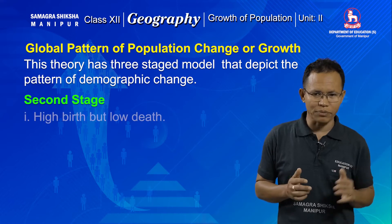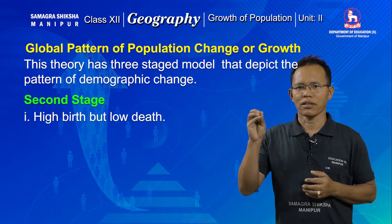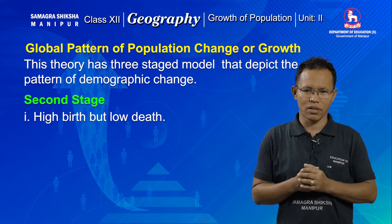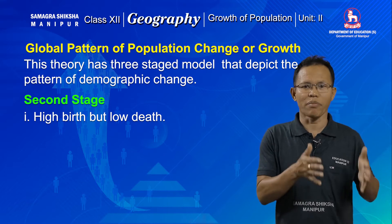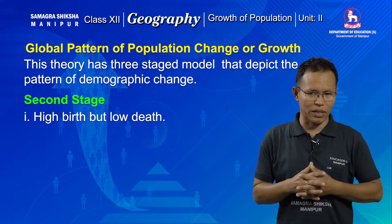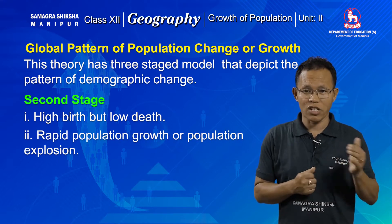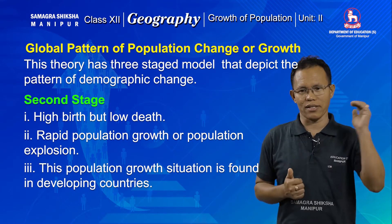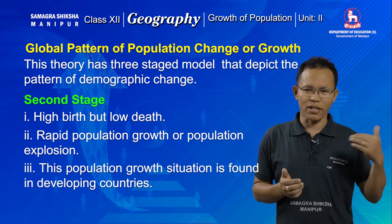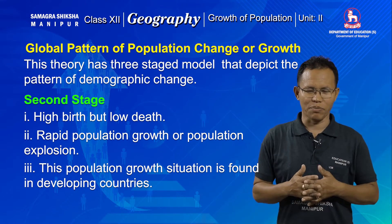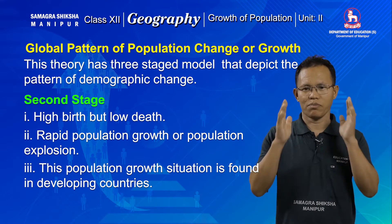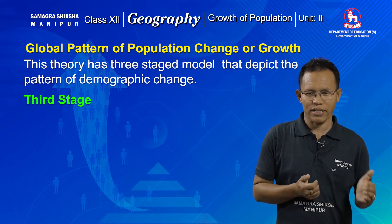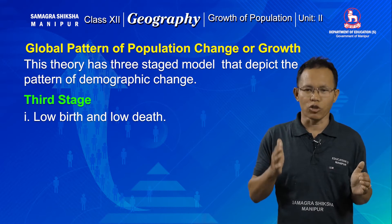The second stage is characterized by high birth but low death. The higher birth rate in the second stage continues because agriculture remains the main source of livelihood for people. This population situation, which is called population explosion, was characterized in developing countries. Therefore developing countries are having more population because of this rapid growth, which we call population explosion.